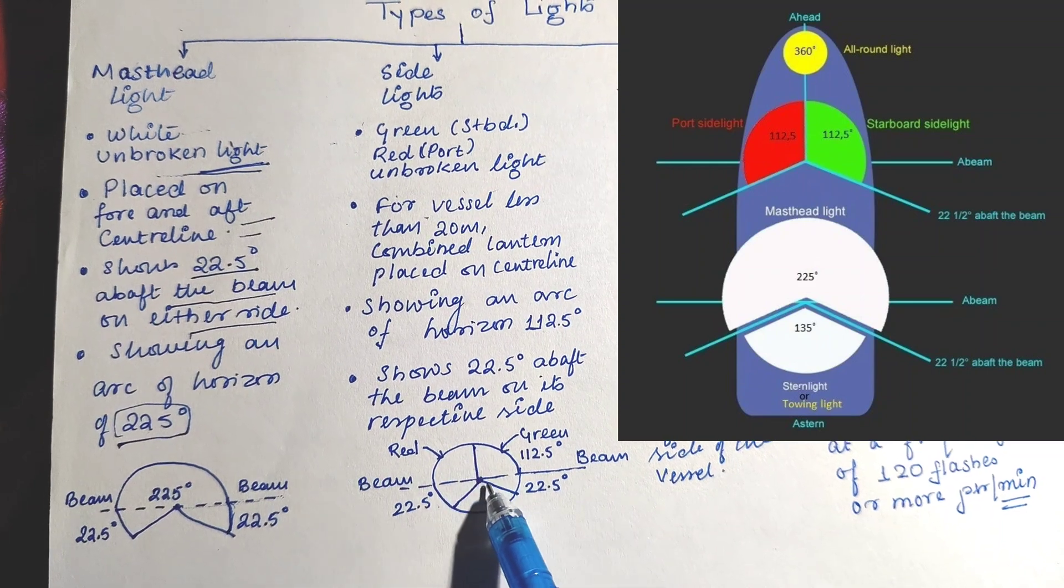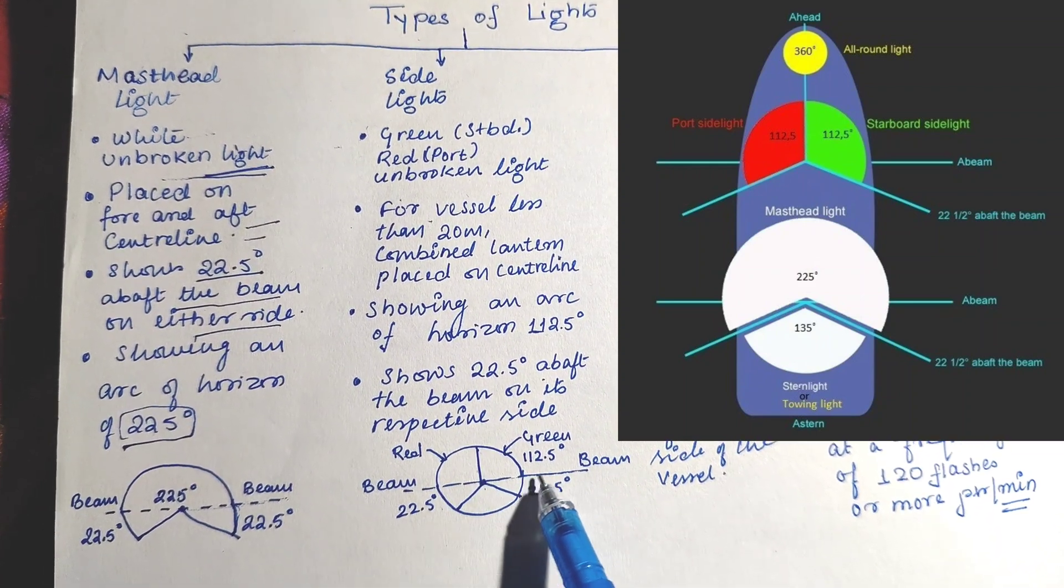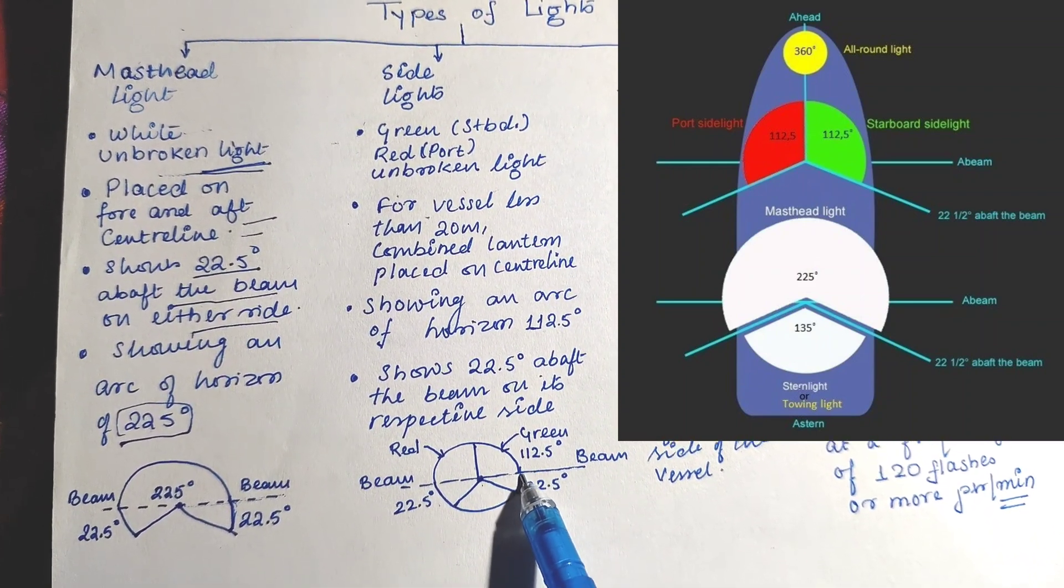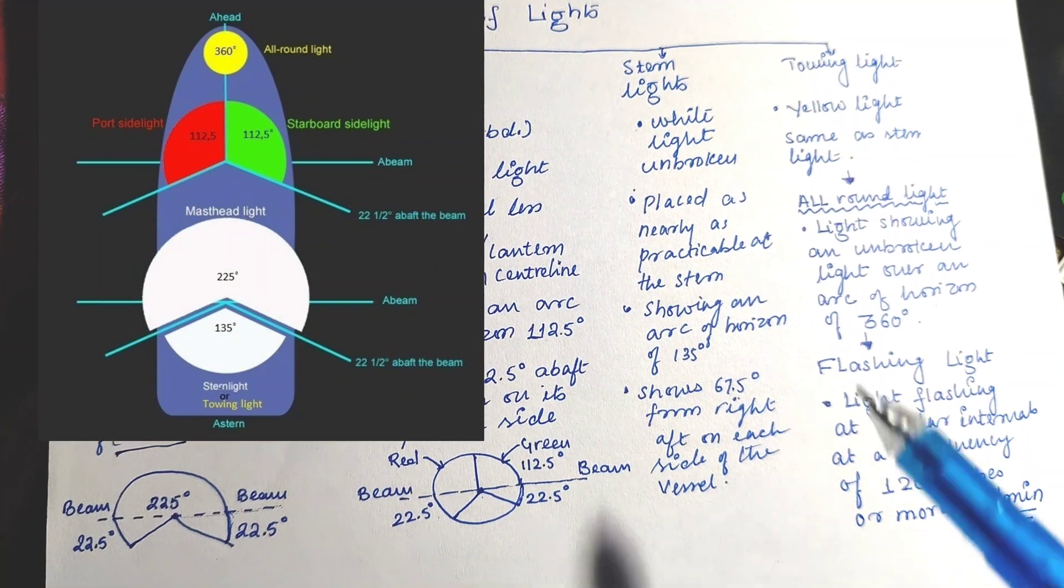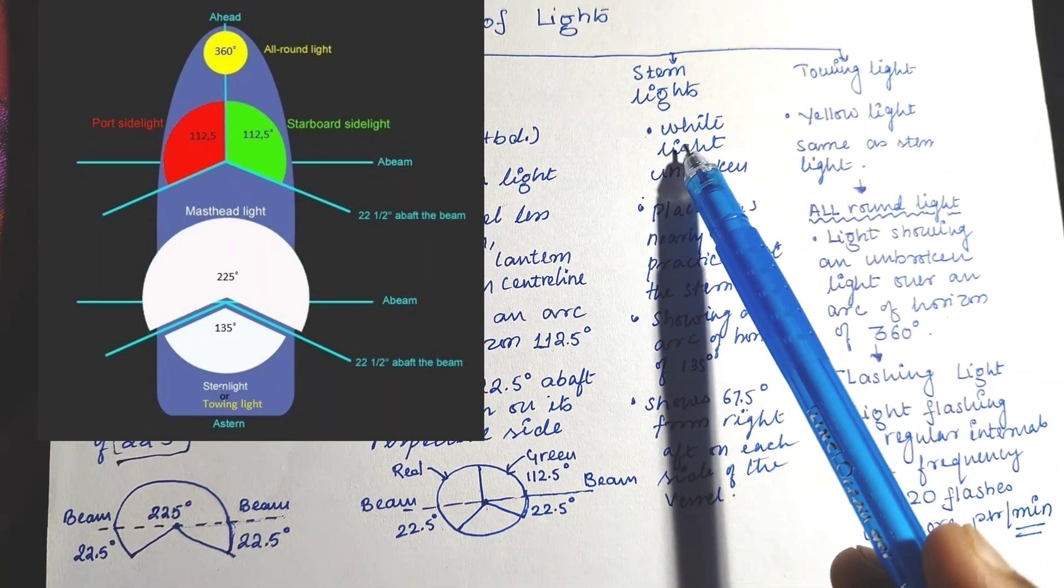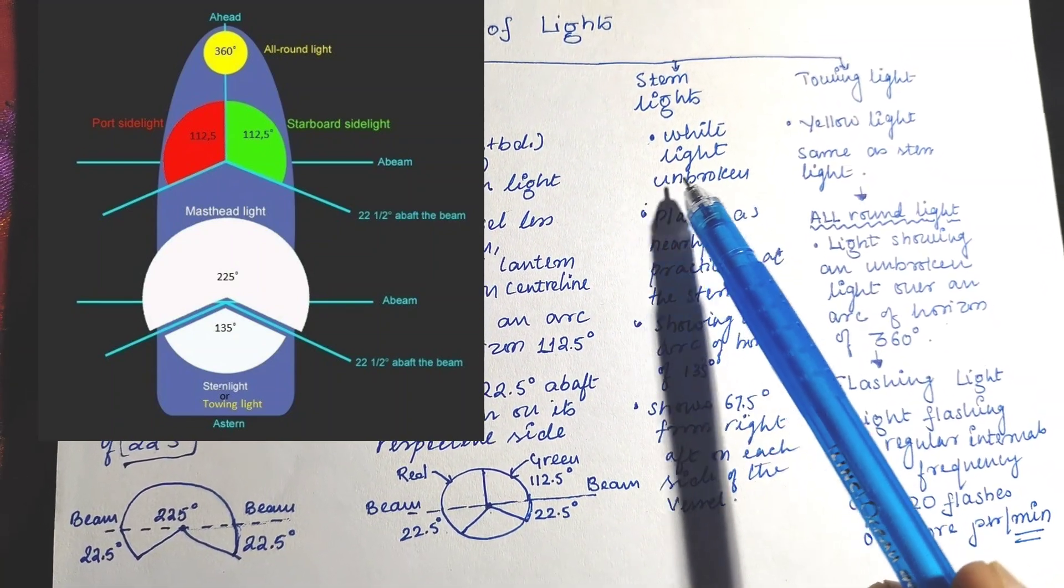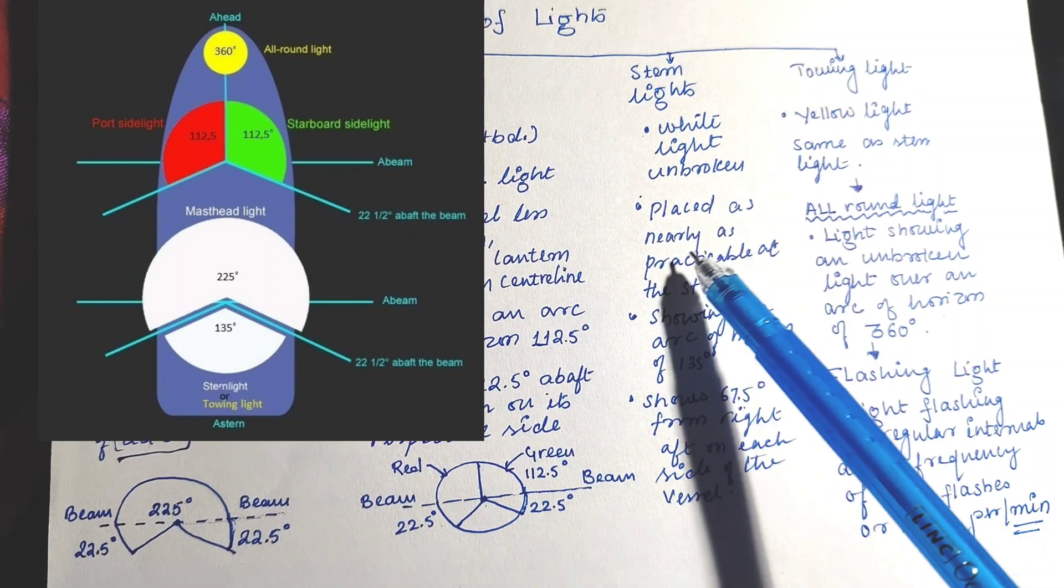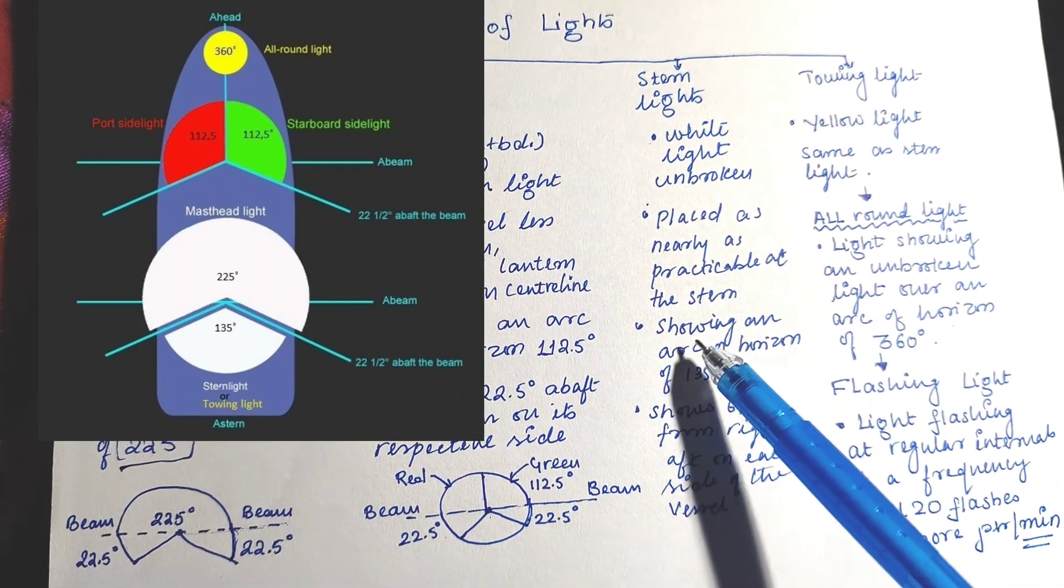Stern light is also a white unbroken light. It is placed as nearly as practicable at the stern, showing an arc of horizon of 135 degrees.